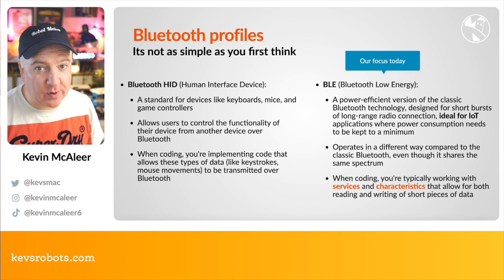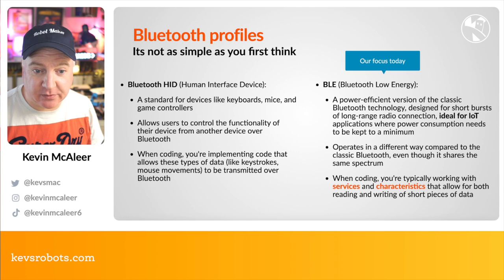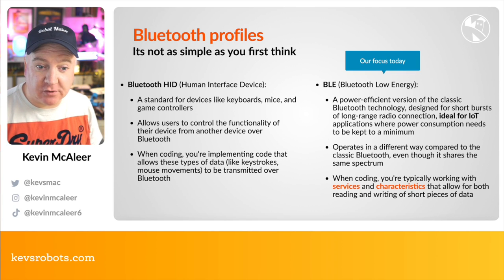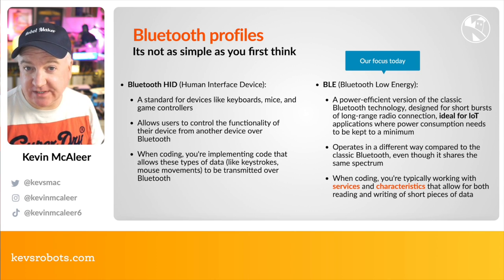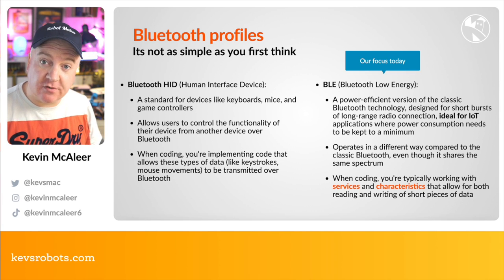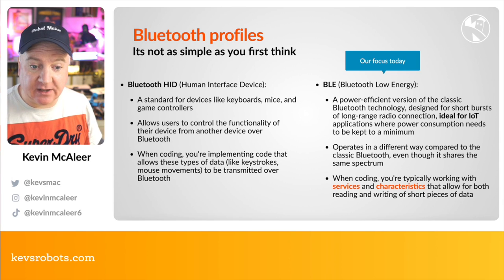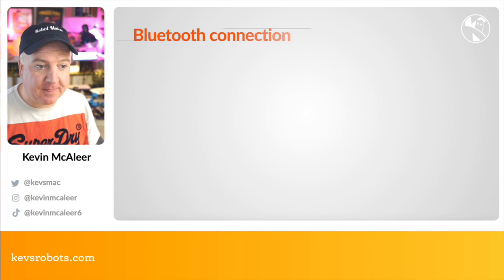The focus of today's session is Bluetooth Low Energy (BLE), which is a newer, power-efficient version of Bluetooth compared to classic Bluetooth. It's designed for short bursts of long-range radio connections, ideal for IoT applications where power consumption needs to be kept to a minimum — exactly what we're looking at for battery-powered robots. When coding with BLE, we typically work with services and characteristics that allow reading and writing of short pieces of data.